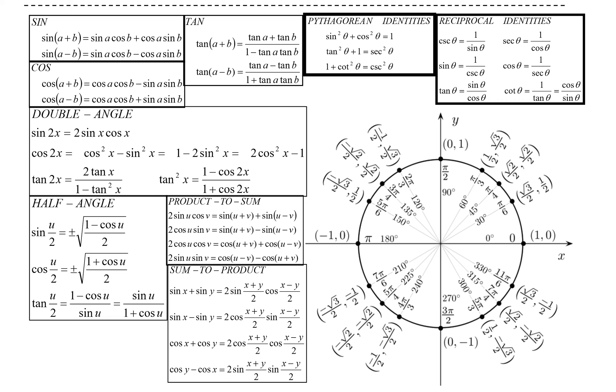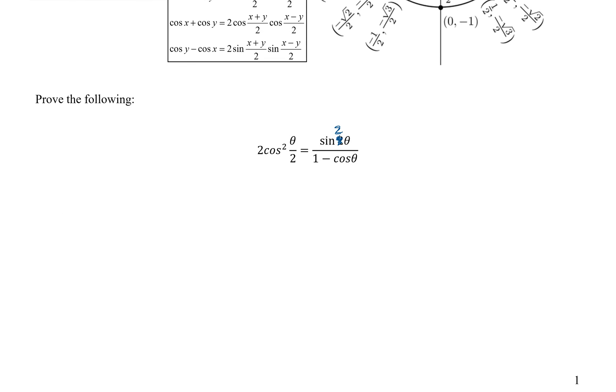The sine and difference, sum and difference, your Pythagorean identities, and your reciprocal identities. All right, so let's try some with half angles.